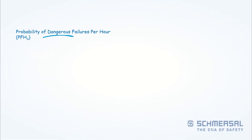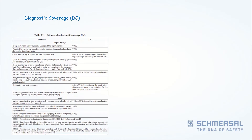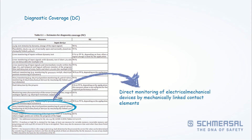These are the probability of dangerous failures per hour. In order to calculate your probability of dangerous failures per hour, ISO 13849 takes into account four parameters. This includes the diagnostic coverage, which essentially is the way we monitor our safety circuit.